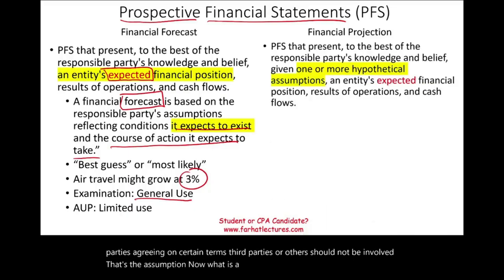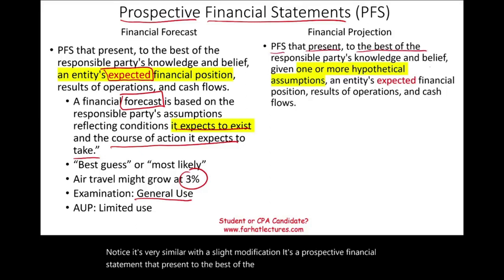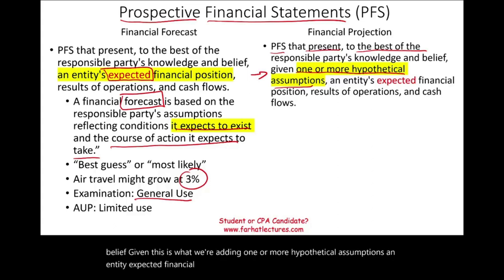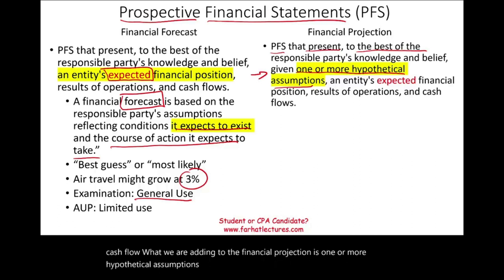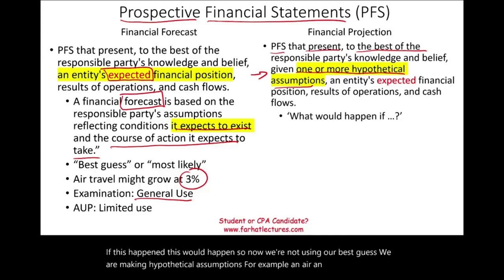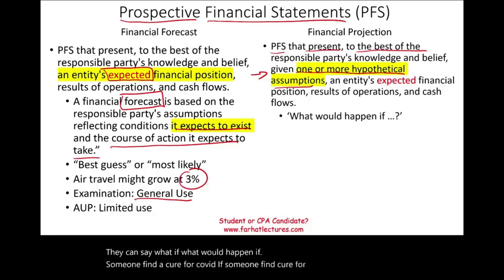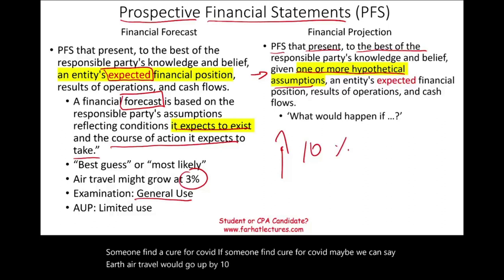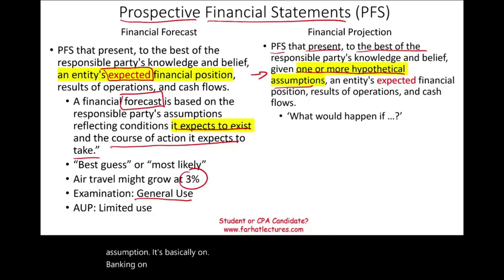What is a financial projection? It's very similar with a slight modification. It's a prospective financial statement that presents, to the best of the responsible party's knowledge and belief, given one or more hypothetical assumptions, an entity's expected financial position, results of operations, and cash flows. For example, an airline company could say: what would happen if someone found a cure for COVID? If that happened, maybe air travel would go up by 10%. But this is a hypothetical assumption — banking on some event that may or may not happen.